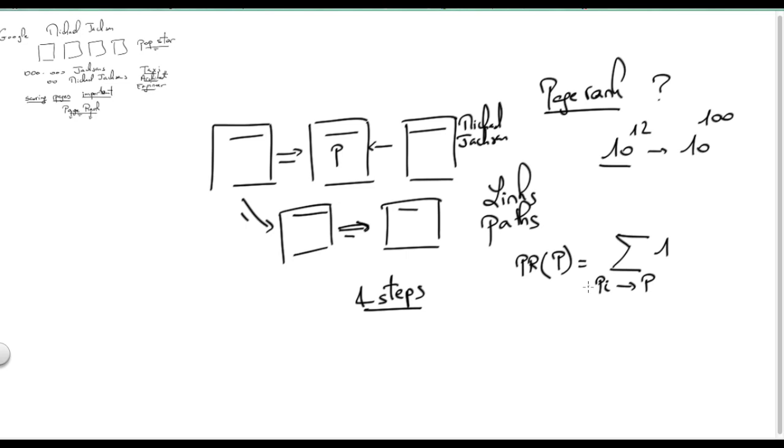Intuitively, the idea is the following. If somebody ends up in a given page here, then the existence of this path means that this user is likely to walk towards the page P. So we think of it as a random walk and these paths model somehow the fact that a user has some probability of ending up in the page P. This is the first step.